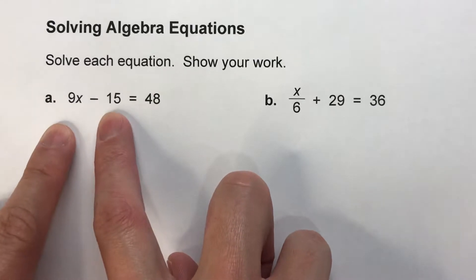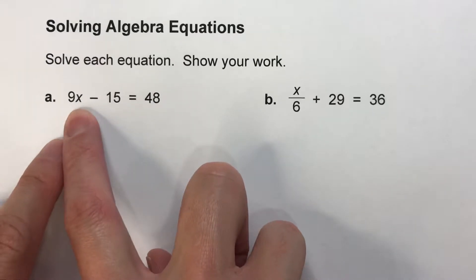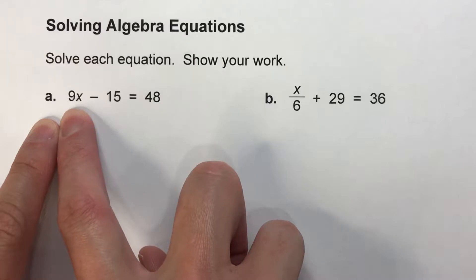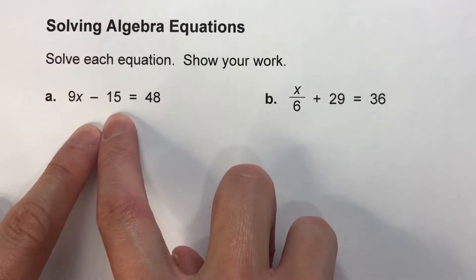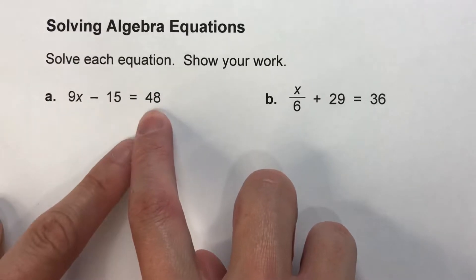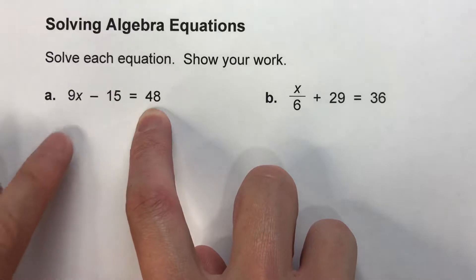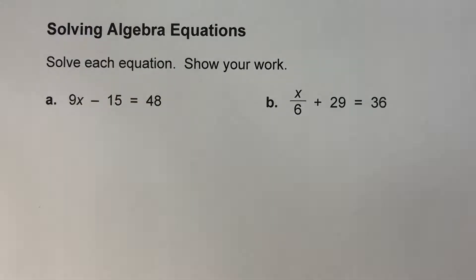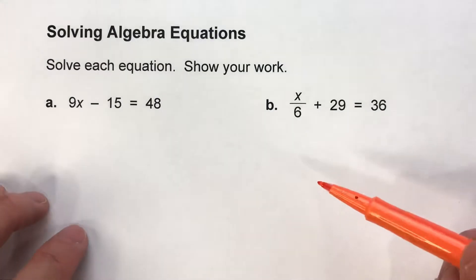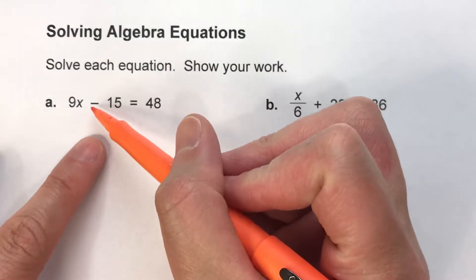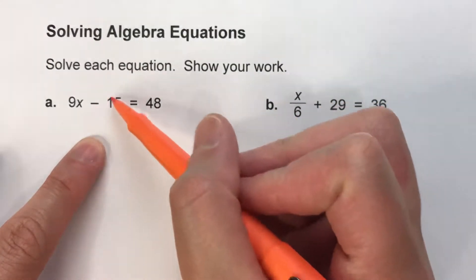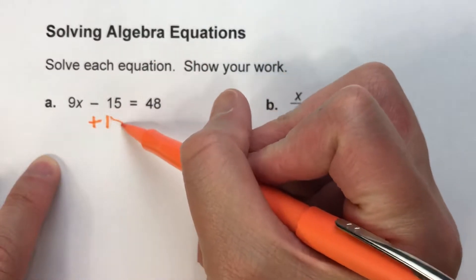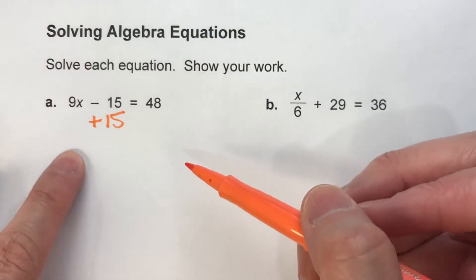Let's look at this first problem. We've got x, and the first thing they did to x was multiply it by 9. The next thing they did was subtract 15, and we ended up with 48. So since the last thing they did to x was subtract 15, that's the first thing we're going to undo. The opposite of subtracting 15 is adding 15, so we're going to undo it by adding 15.